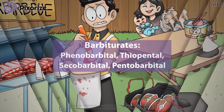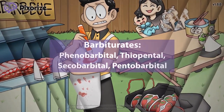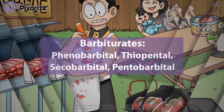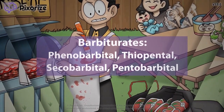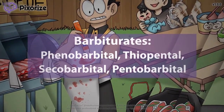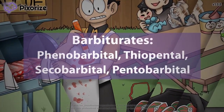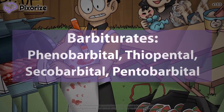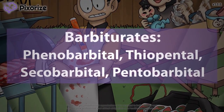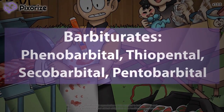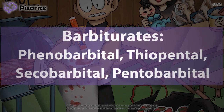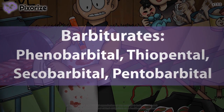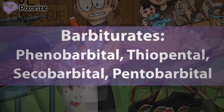Barbiturates are a class of drugs used to treat seizures and induce anesthesia. They work by activating GABA receptors in the brain, specifically by prolonging the duration that GABA-activated chloride channels stay open. In this video, I'll share my visual mnemonic to help you remember all the information about barbiturates, so you'll be ready for test day!